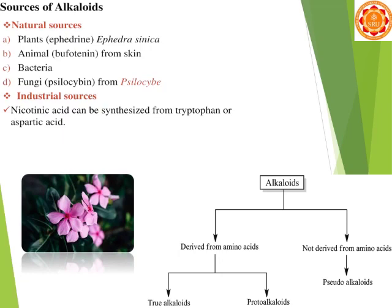We are also getting alkaloids from bacteria and from fungi, like psilocybin from Psilocybe. The industrial source of alkaloids — for example, nicotinic acid — can be synthesized from tryptophan or aspartic acid.